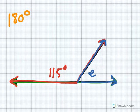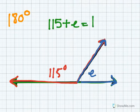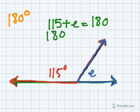I can write two equations to represent this problem. I can write 115 plus E equals 180, or I can write 180 minus 115 equals E.